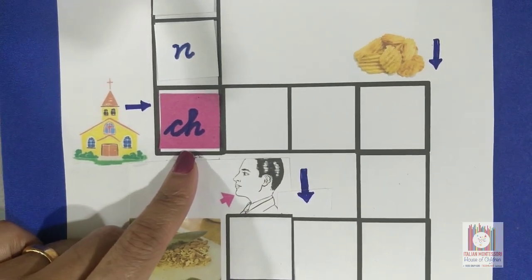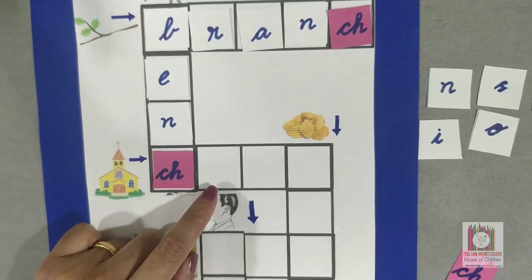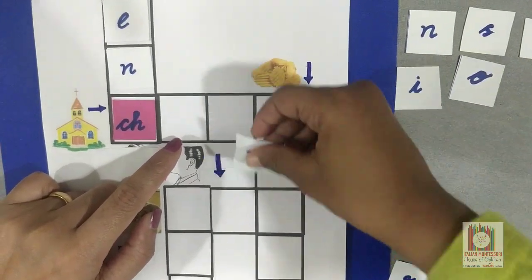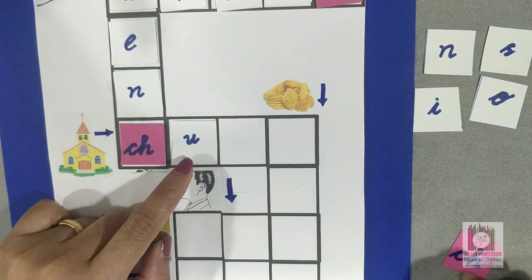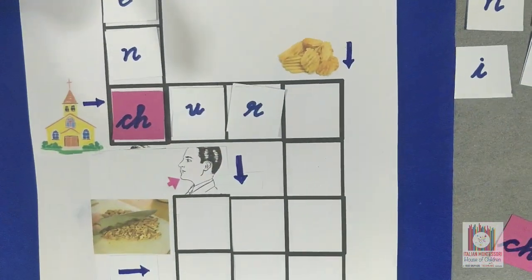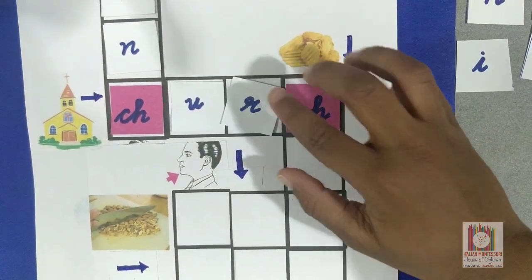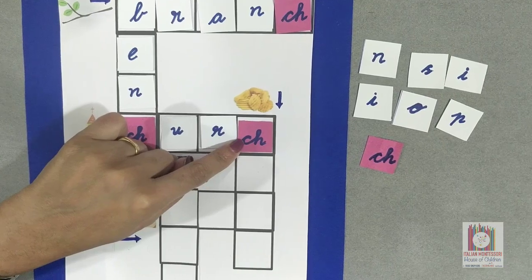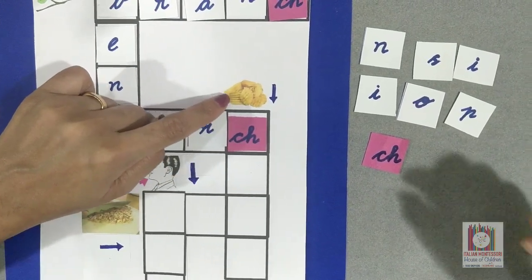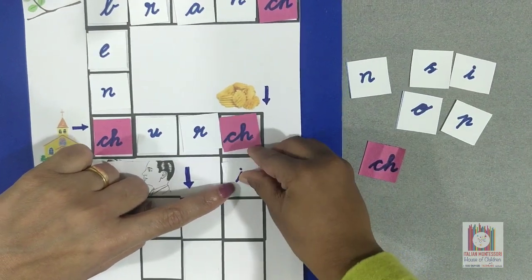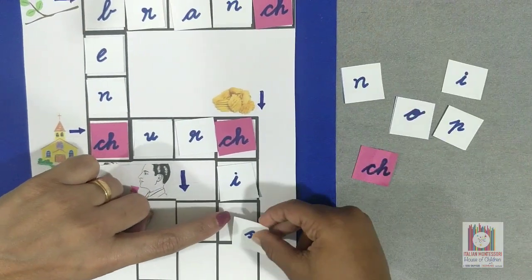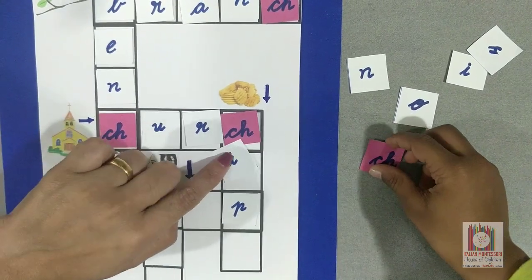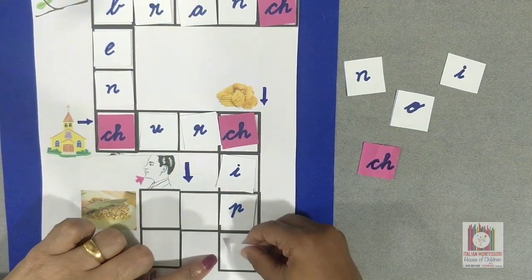What picture is this? Chips. Chips. And CH is there already. After CH, what do you hear when we say chips? I. Chips. After I sound, what did you hear? P. Yes. Chips. Good job.